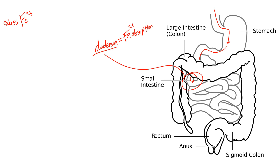In this disease, we're having excess absorption of iron in the duodenum. The reason for that is because there's a mutation in a gene called HFE — the HFE gene. This gene normally controls how much of a molecule called hepcidin is produced.